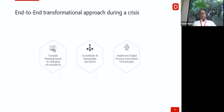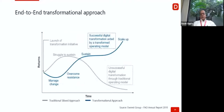We need to bring in an end-to-end transformational approach during a crisis. We need to plan, figure out various scenarios, and then based upon changing circumstances, implement all the models and input the transformation engine well in advance. We need to consolidate our standardized operating model and implement digital process automation. The most important — and most difficult — part when beginning any transformation journey is managing change, both internally and externally. We must overcome resistance and then sustain and scale what has been achieved.